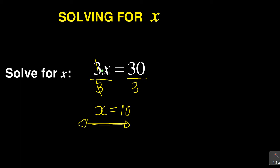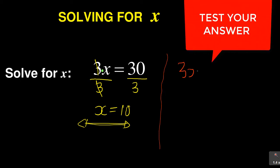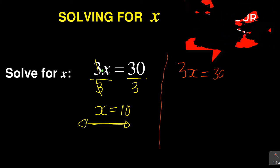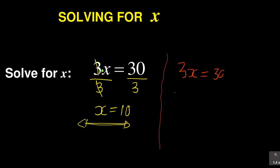Don't be tempted to make the 3 jump to the other side — that is not correct, because when you are multiplying, the number is combined with x and cannot jump. To test your answer: 3x equals 30, and our x is 10. So 3 times 10 equals 30. On the left-hand side, 3 times 10 is 30, which equals the right-hand side — this balances, so x equals 10 is correct.